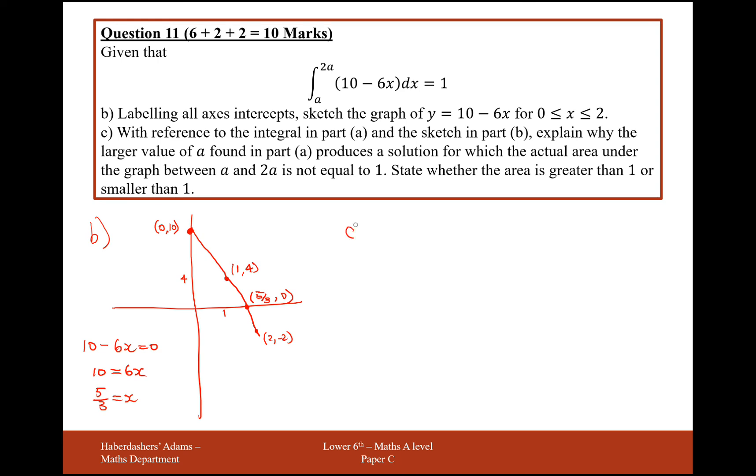With reference to the integral in part A and the sketch in part B, explain why the other value of A found in part A produces a solution to which the area under the graph between A and 2A is not equal to 1 and state whether the area given is greater than or equal to 1. So what we've got going on here is we've got a value. Our A value was either 1 ninth or 1.